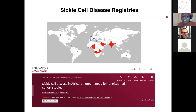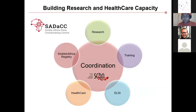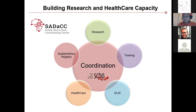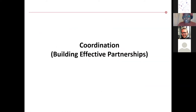So there is an urgent need to develop sickle cell registries and longitudinal studies. SADAC is working towards building research capacity in sickle cell disease so that we can understand and address this disease better. We are also increasing healthcare capacity through coordination of sickle cell stakeholders across the globe, especially in sub-Saharan Africa, and strengthening research training, ethical, legal, and social implications work, and healthcare.